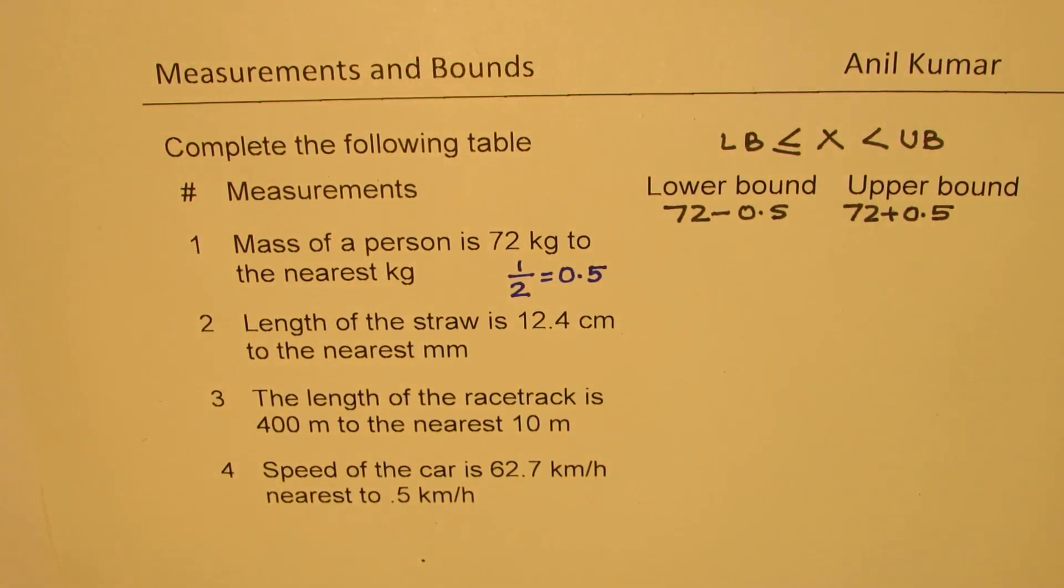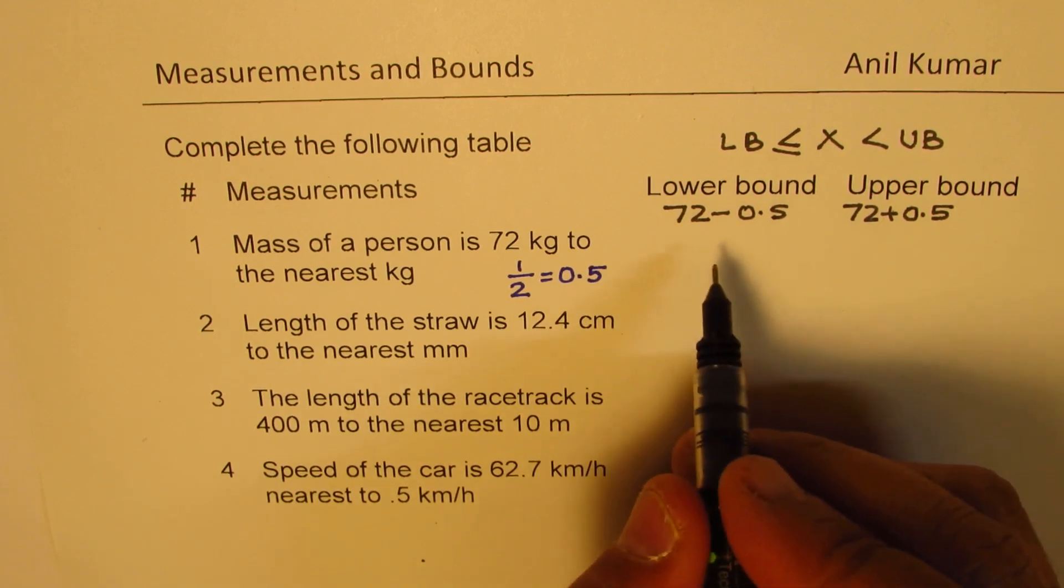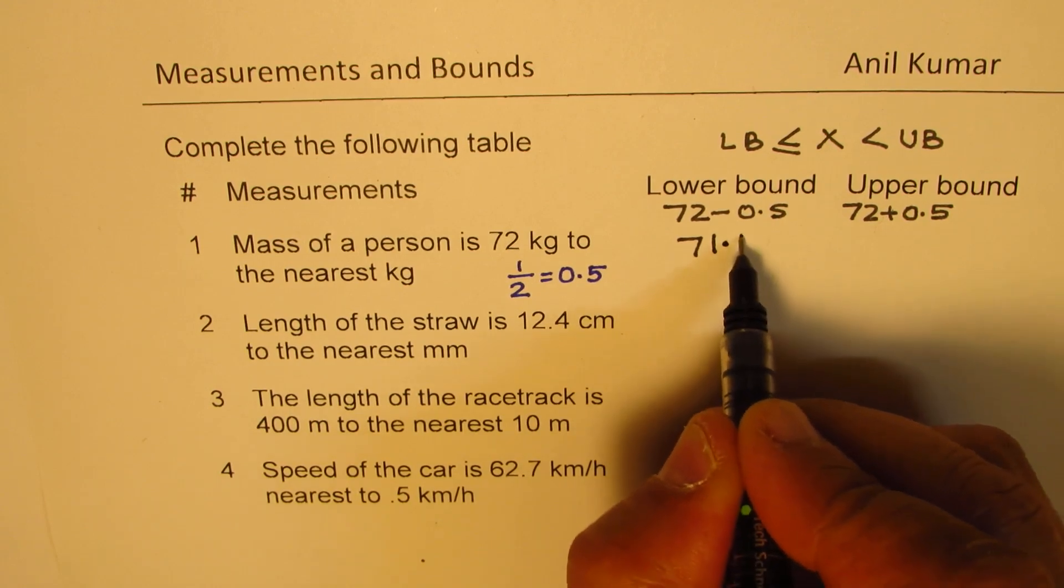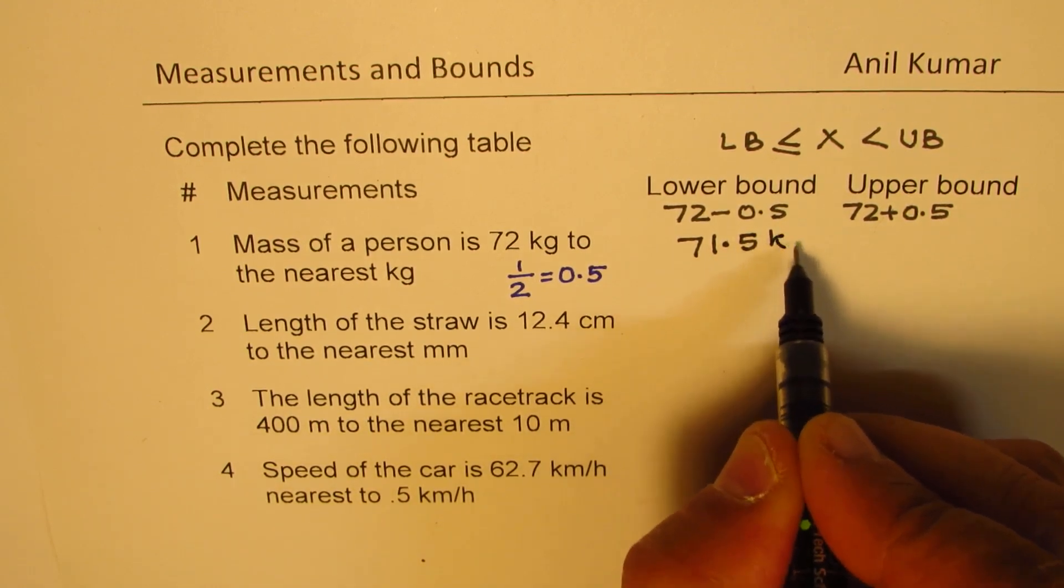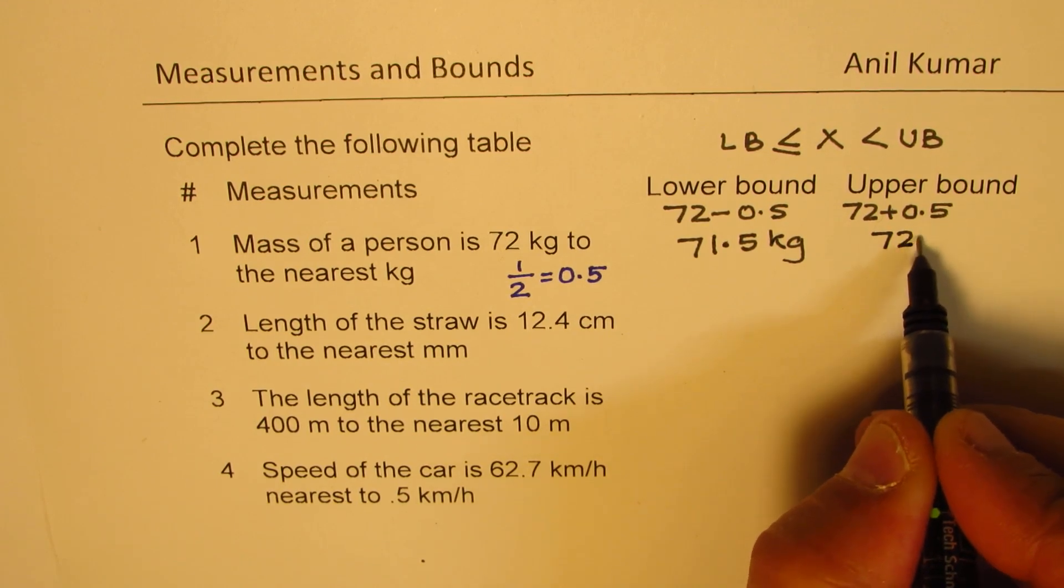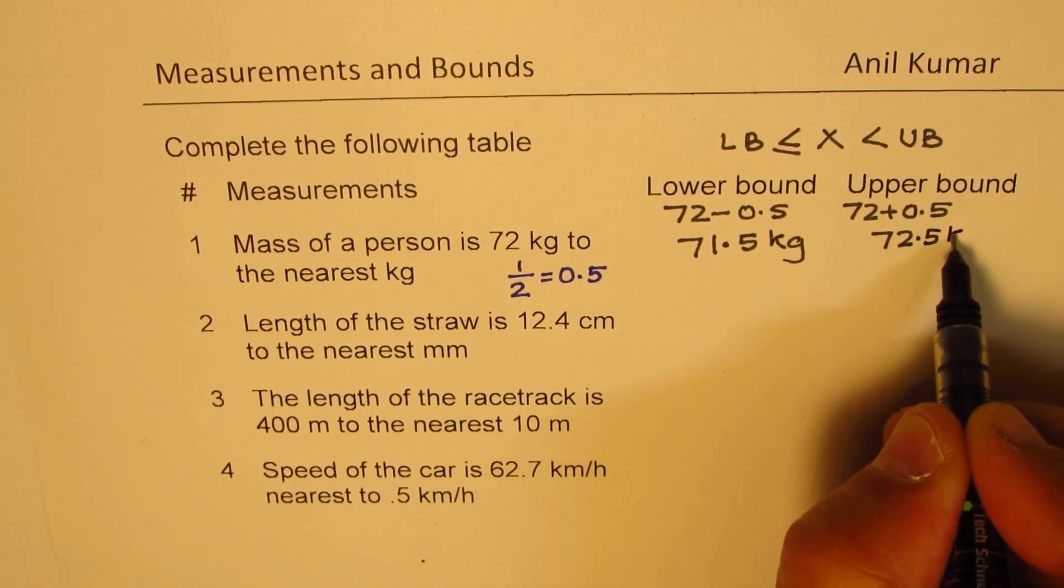So, in this case, the lower bound is going to be 71.5 kg, and the upper bound is going to be 72.5 kg. Is that clear to you?